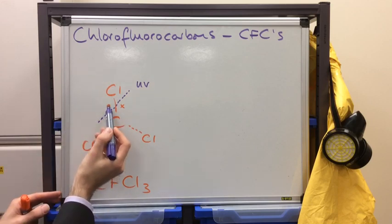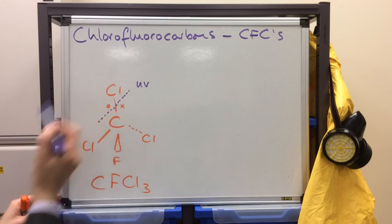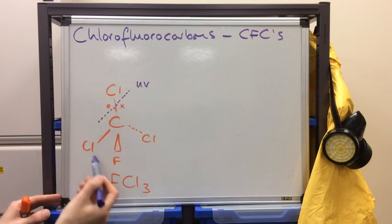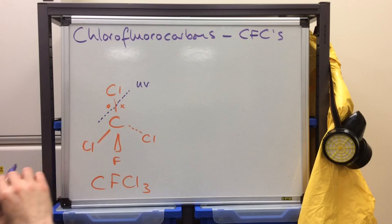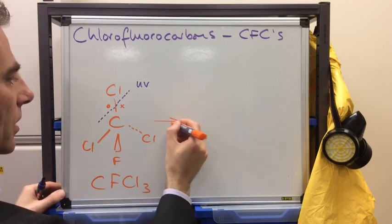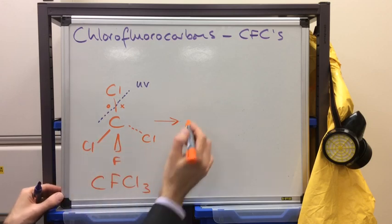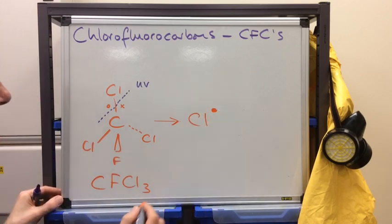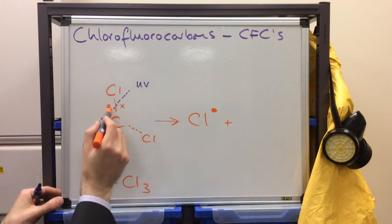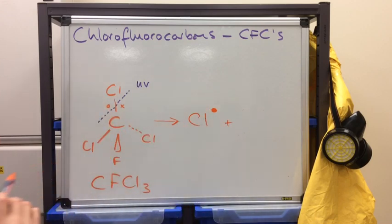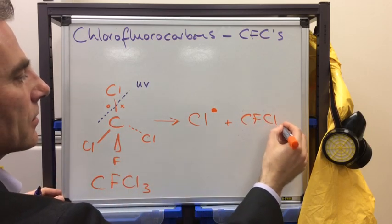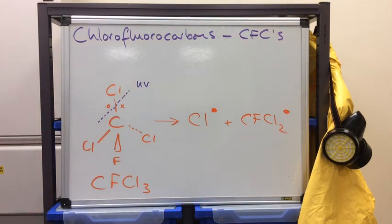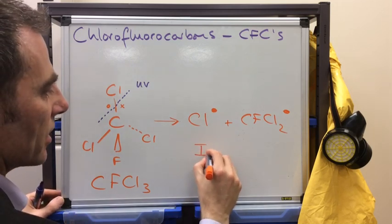One electron will be taken or kept by this chlorine. And this electron will be kept by the remaining part of the molecule. And so, we've seen this before in the chlorination of methane mechanism. We're going to end up with two free radicals. So the chlorine radical with its unpaired electron. And we're going to end up with the CFCl2 radical. This is called an initiation step.